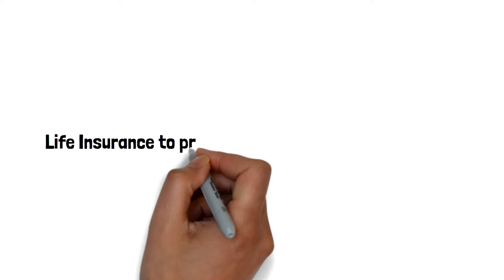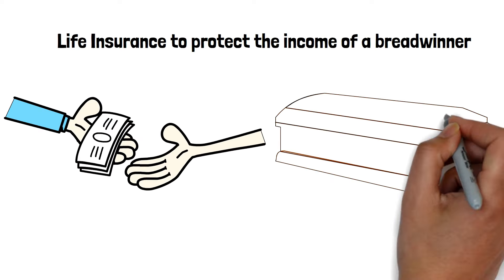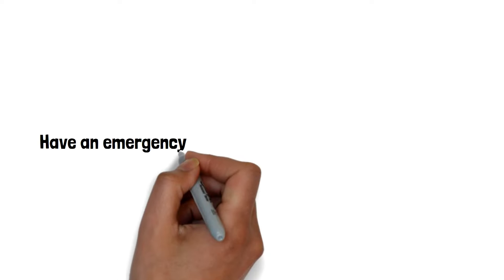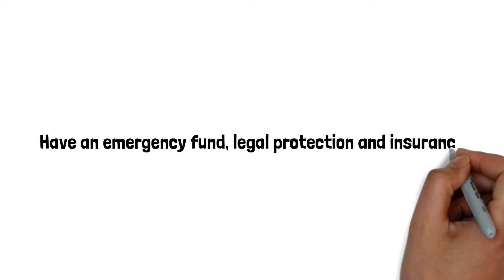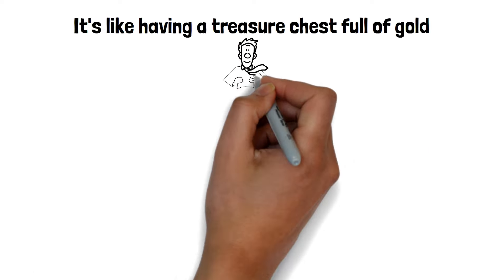Think of term life insurance to protect the income of a breadwinner and to pay for final expenses due to an untimely death of a loved one. Have an emergency fund, legal protection and insurance for your car and home. It's like having a treasure chest full of gold. You'll feel like you can conquer the world.